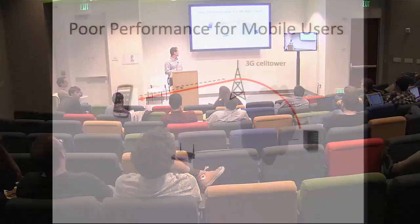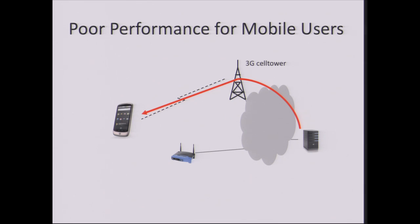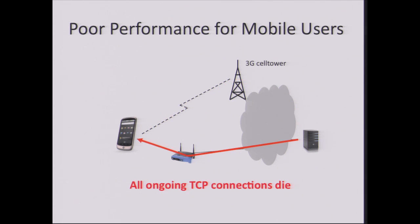Here's an example: me commuting to my university, listening to internet radio using 3G because there's no Wi-Fi coverage on the route. As I get to my office, there's Wi-Fi. At this point I'd like my radio to switch to Wi-Fi because it costs less money and uses less energy. But the trouble is TCP has bound the connection to the 3G interface. The minute I kill this interface, the connection goes down. To move to Wi-Fi, all ongoing connections must die and the application must restart.